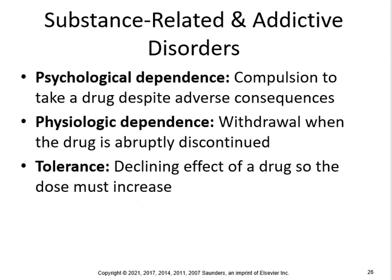Psychological dependence is a compulsion to take a drug despite adverse consequences. Physiological dependence involves withdrawal when the drug is abruptly discontinued. Tolerance means the declining effect of a drug so that the dose must be increased. Substances associated with drug abuse include alcohol, amphetamines, cannabis/marijuana, cocaine, hallucinogens such as LSD and PCP, heroin, and morphine.